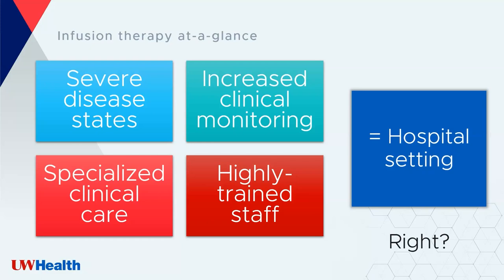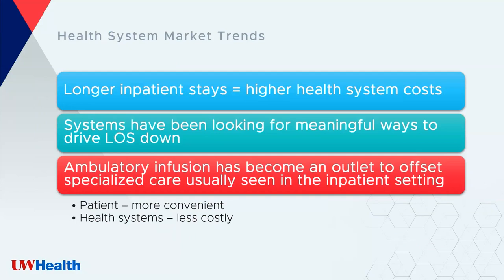Historically we would see infusion therapy in an inpatient setting, and now more and more of these components are being treated in an ambulatory setting. When we think of the health system market trends, inpatient longer stays are generally associated with higher health system costs, so health systems are looking for meaningful ways to drive length of stay down. Ambulatory infusion provides convenience for patients — you're able to be infused in your own community — and it's less costly for health systems.